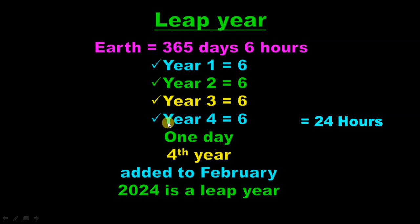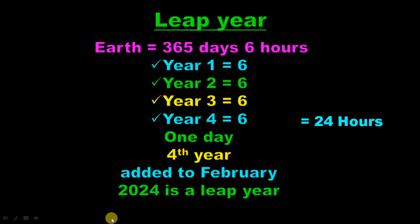Every year February is 28 days, but in a leap year February is 29 days. The extra 6 hours each year are added into February every four years, making it 29 days in a leap year. For example, 2024 is a leap year.